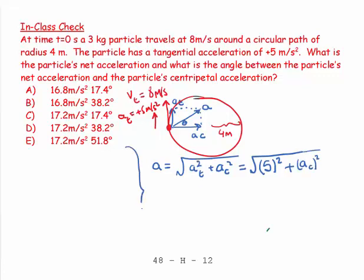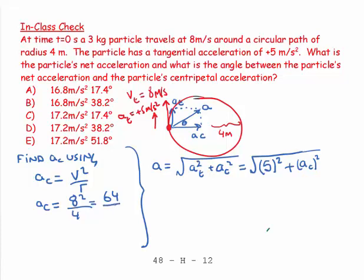Then I come to the side, and I say, find AC using AC is equal to V squared over R. So AC is going to equal 8 squared, the tangential velocity squared over 4, which equals 64 over 4. AC is going to equal 16 meters per second squared.